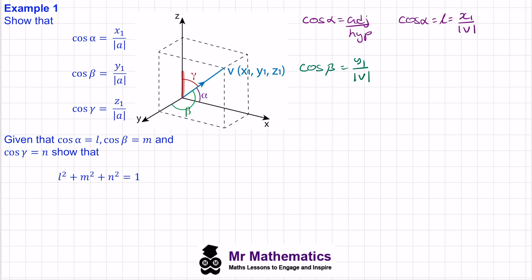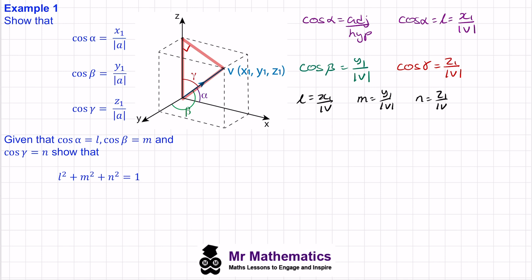For the z-axis we have z1, and the right angle comes from the z-axis to our vector. The hypotenuse is again the magnitude of the vector, so cos gamma equals z1 over the magnitude of V. Defining these in terms of L, M and N: L = x1/|V|, M = y1/|V|, and N = z1/|V|.